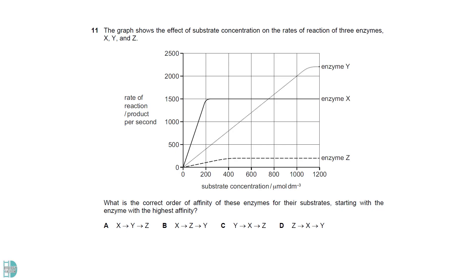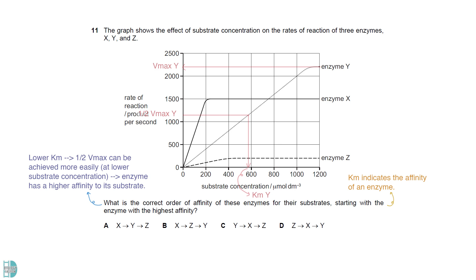To know the affinity of an enzyme, we need to find the Km. A lower Km means half of Vmax can be achieved more easily, indicating that the enzyme has a higher affinity to its substrate. Divide the Vmax of each enzyme by two and read their Km values from the X axis. X has the lowest Km and Y has the highest. So, X has the highest affinity and Y has the lowest.